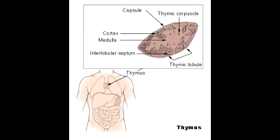What is a thymus? Thymus is an encapsulated immune organ which serves as a site of T-cell differentiation and maturation. Remember that T-cells mature in the thymus, whereas B-cells mature in the bone marrow — T for T-cells and T for thymus, B for B-cells and B for bone marrow.